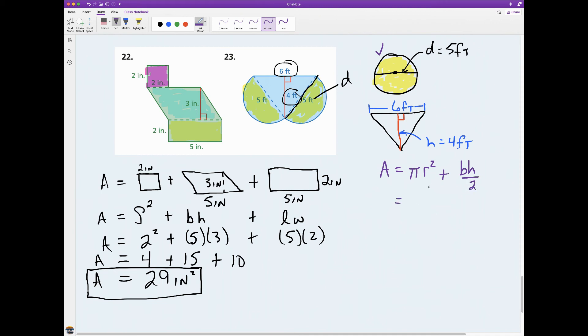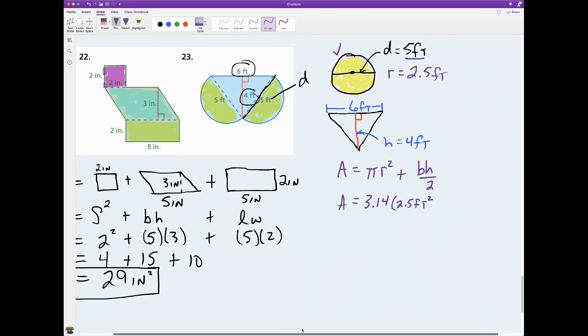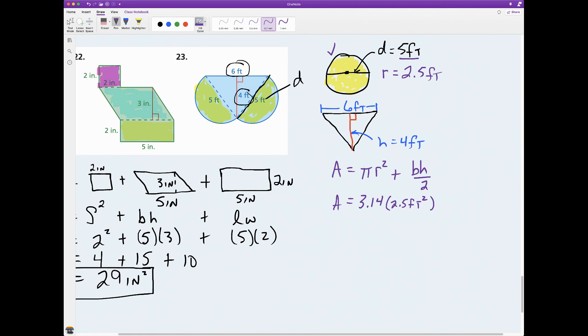Let's just plug all these numbers in. So I have 3.14 times the radius. Well, the diameter is 5 feet so the radius is half of that, so it has to be 2.5 feet. So this would be 2.5 feet squared, plus the base of the triangle is 6 feet, so 6 times 4 divided by 2.